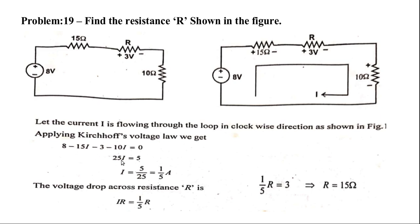Simplifying, I equals 1/5 A. Now using V = IR: (1/5) × R equals 3, so R equals 15 ohms.